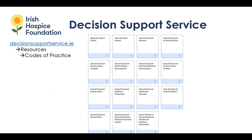If you haven't seen the Decision Support Service website, please use it as a great resource. Under decisionsupportservice.ie, resources, Codes of Practice, you'll find all 13 codes of practice, plus the glossary. They're very easy to read, and what we've developed today draws from these along with the knowledge we already have.